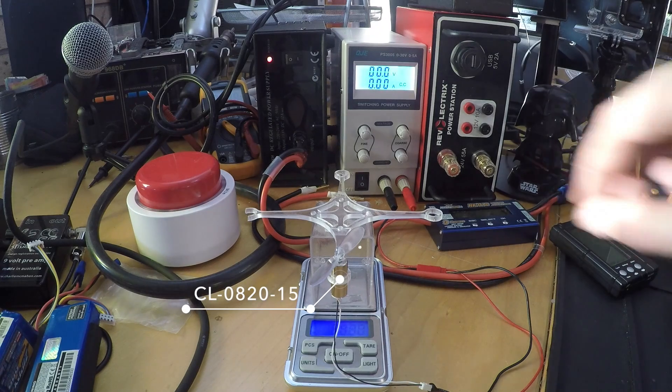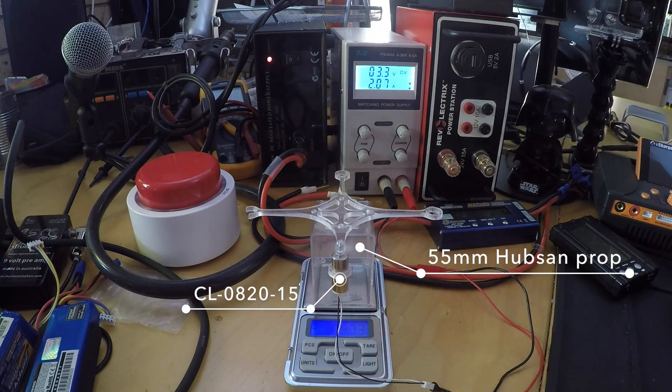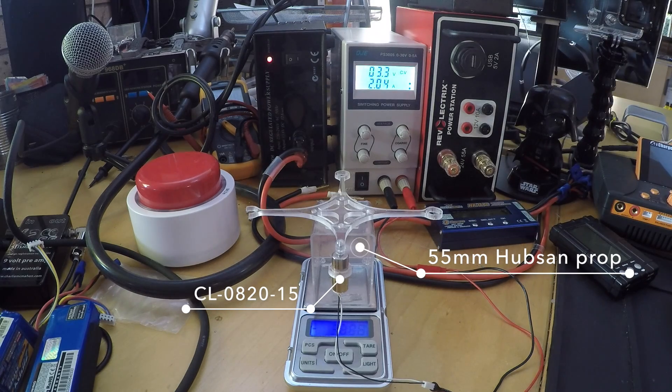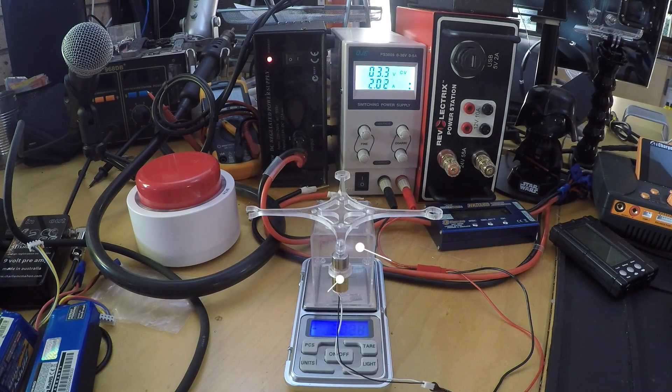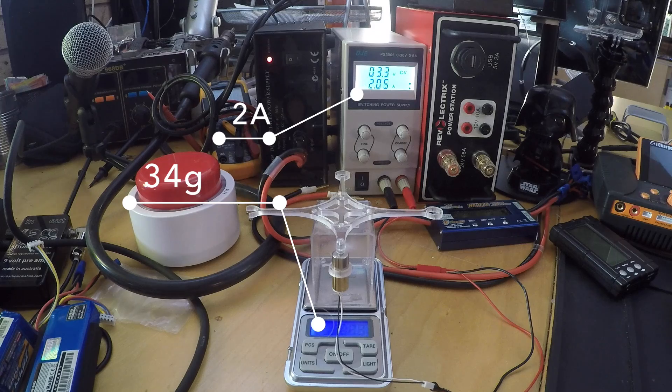820-15 motors, clear Hubsan propellers, 3.3 volts, and no current limitation. Pulls just over 2 amps and produces 34 grams of thrust.